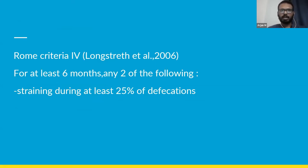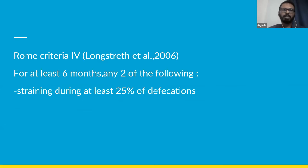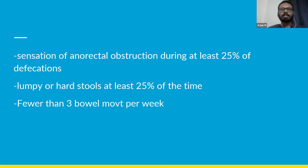Regarding the criteria for constipation, we use the Rome criteria. A person is said to be suffering from constipation if they have any two of the following symptoms for at least six months: straining during at least 25% of defecations, sensation of anorectal obstruction during at least 25% of defecations, lumpy or hard stools, or fewer than three bowel movements per week.